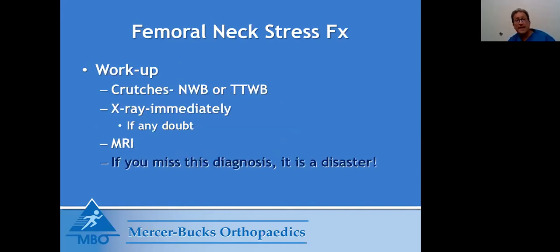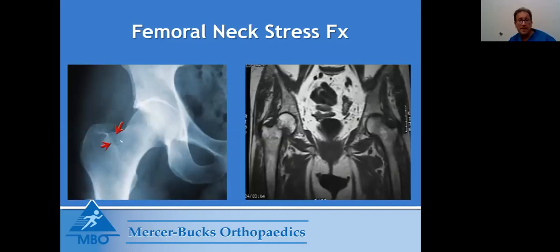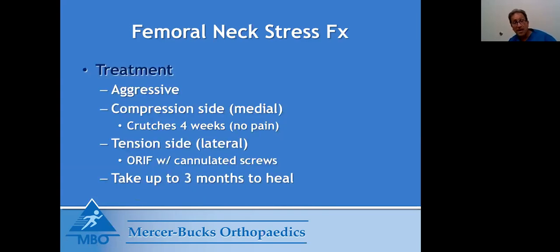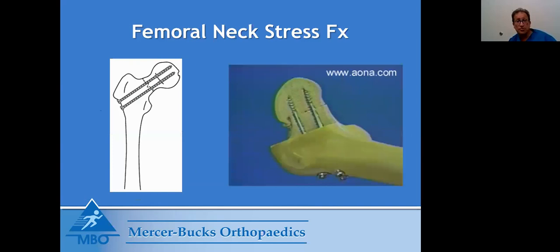There are two types of femoral neck stress fractures. One is on the compression side — the underside, where bone takes load — those will not fail and can be treated with rest and crutches without surgery. The ones on the tension side, if not caught right away, could mean you need a hip replacement. So if you have vague groin pain and you're a high-level female runner, you need an x-ray and an MRI to make sure you don't have a stress fracture. If it's on the tension side, you need two screws placed across your hip.